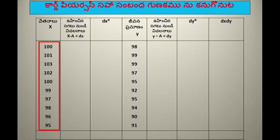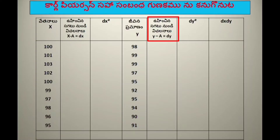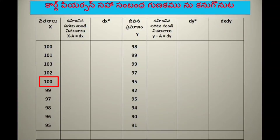If we look at this, we have x and y values. x minus a means a is the assumed mean, and we can choose a number. So if we choose a equal to 100, then x minus 100 equals dx.